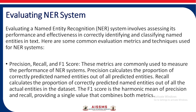Evaluating a named entity recognition system involves assessing its performance and effectiveness in correctly identifying and classifying named entities in text. Here are some common evaluation metrics and techniques used for NER systems. Precision, recall and F1 score are commonly used to measure the performance of an NER system. Precision calculates the proportion of correctly predicted named entities out of all predicted entities. Recall calculates the proportion of correctly predicted named entities out of the actual entities in the dataset. The F1 score is the harmonic mean of precision and recall, providing a single value that combines both metrics.